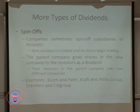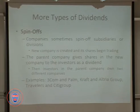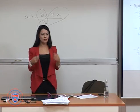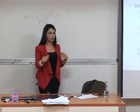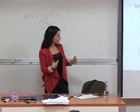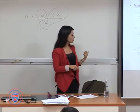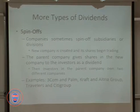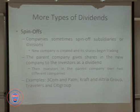We might also see spinoffs. What happens is a new company is generated and the parent company's investors are paid with the new company's shares. So parent company shareholders own both parent company stocks and subsidiary stocks. We see that in the Travelers and Citigroup case, or the Kraft and Altria Group case. This is another way of distributing money to shareholders — they are giving shares of their subsidiaries.